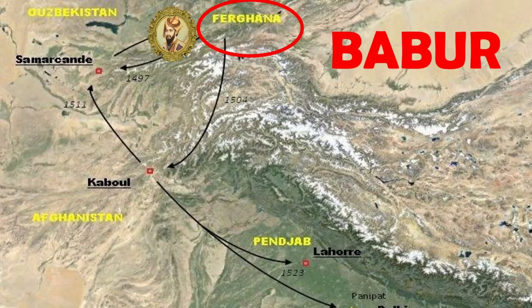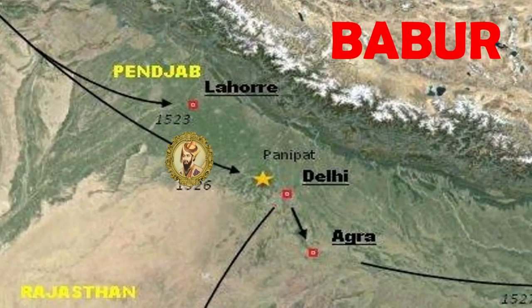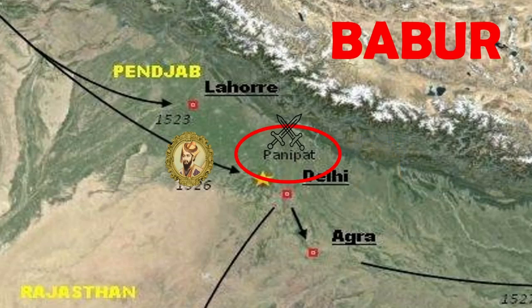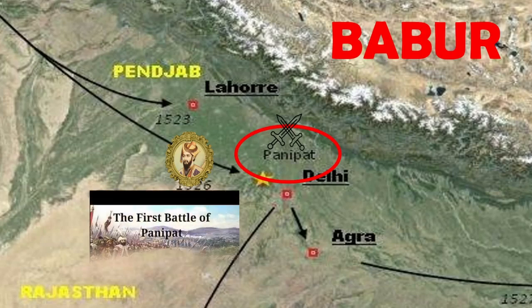The reigning Sultan of Delhi at that time was Ibrahim Lodi. Davlat Khan Lodi was the governor of Punjab under the Sultanate. The relationship between Ibrahim Lodi and Davlat Khan was strained. Davlat Khan Lodi invited Babar to march on India. Taking this opportunity, Babar invaded India. To repel Babar's invasion, Ibrahim Lodi started with his army. There was a battle between Ibrahim Lodi and Babar on 21st April 1526 at Panipat. In this battle, Babar made use of artillery effectively for the first time in India. He defeated Ibrahim Lodi's army. This is known as the First Battle of Panipat.